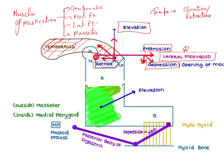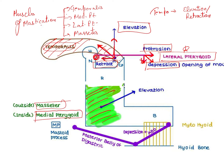This greenish area represents the outer side, which is your masseter, and inside the same area towards the ramus you will have the medial pterygoid. The vector component for these muscles is directed upward, which causes elevation of the mandible. So both the masseter and medial pterygoid are responsible for elevation.